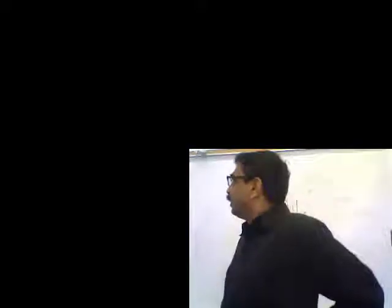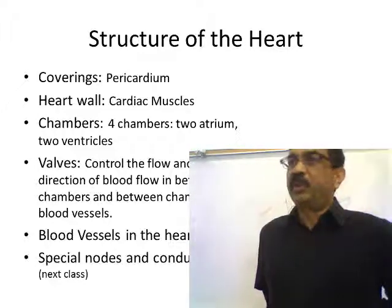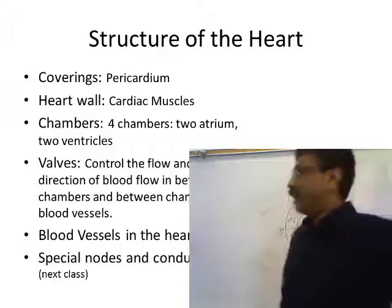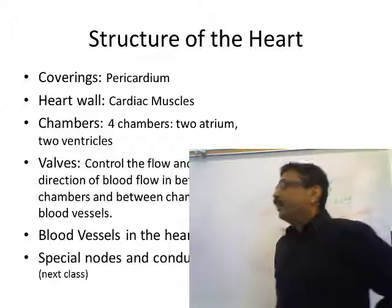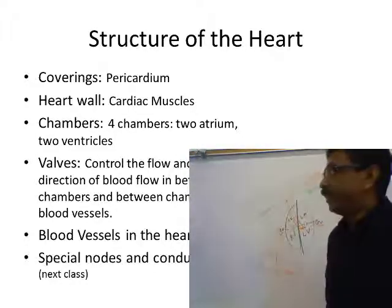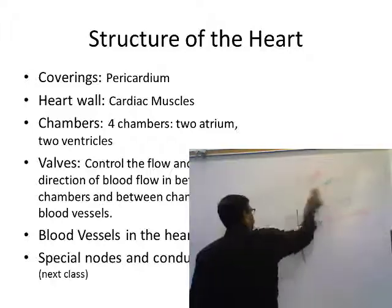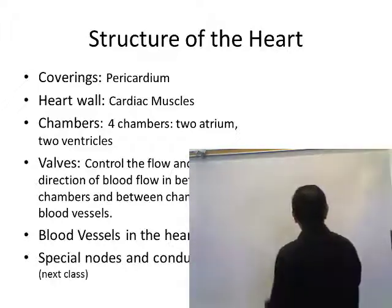Structure of the heart: the heart has a double-layered serous covering called the pericardium. In the wall of the heart you have highly specialized muscle tissue called cardiac muscle. Inside the heart you have four chambers: two atria and two ventricles. Also inside the heart you have four sets of valves.